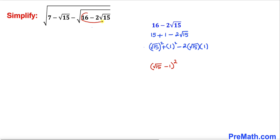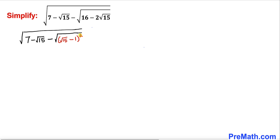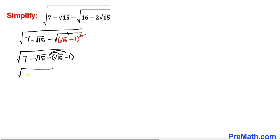So I am going to replace this radicand by this simplified form. As you can see in the next step, I have replaced that part with the simplified one. Now the square and the square root undo each other, so we end up with the square root of 7 minus square root of 15 minus the quantity square root of 15 minus 1. Distributing the negative sign gives us square root of 7 minus square root of 15 minus square root of 15 plus 1. Combining like terms: 7 plus 1 gives 8, and the like terms give minus 2 times square root of 15.